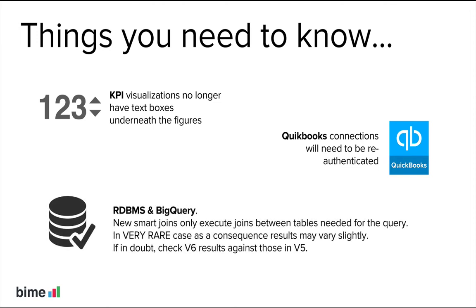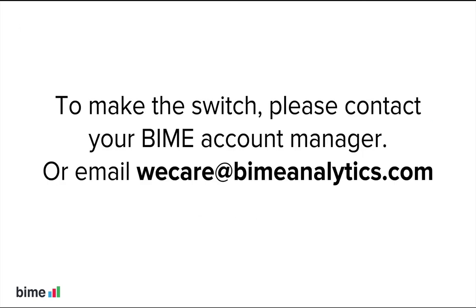For relational databases and BigQuery, new smart joins only execute joins between tables needed for the query. So in very rare cases, as a consequence, results may vary slightly. If in doubt, check V6 results against those in V5.